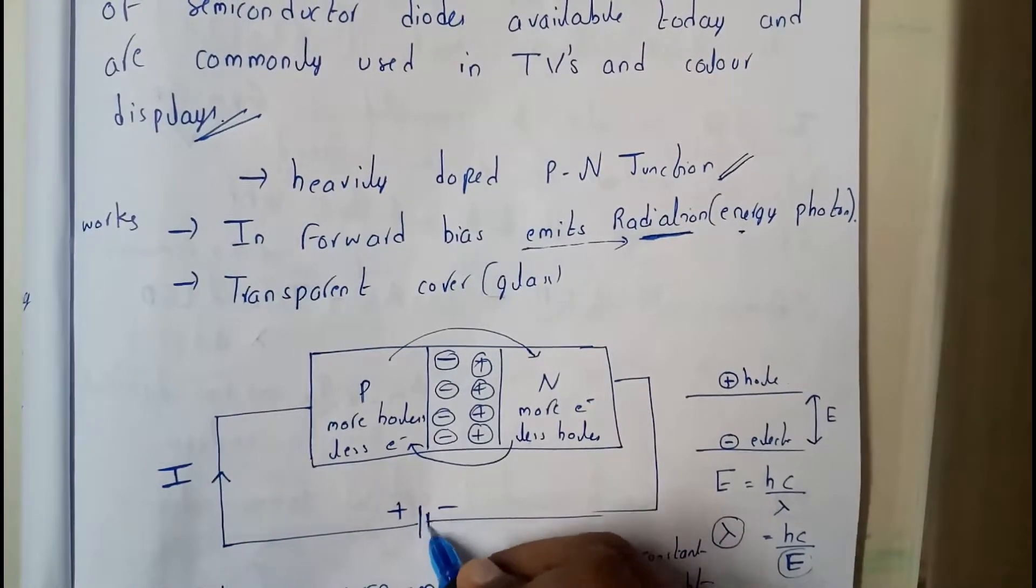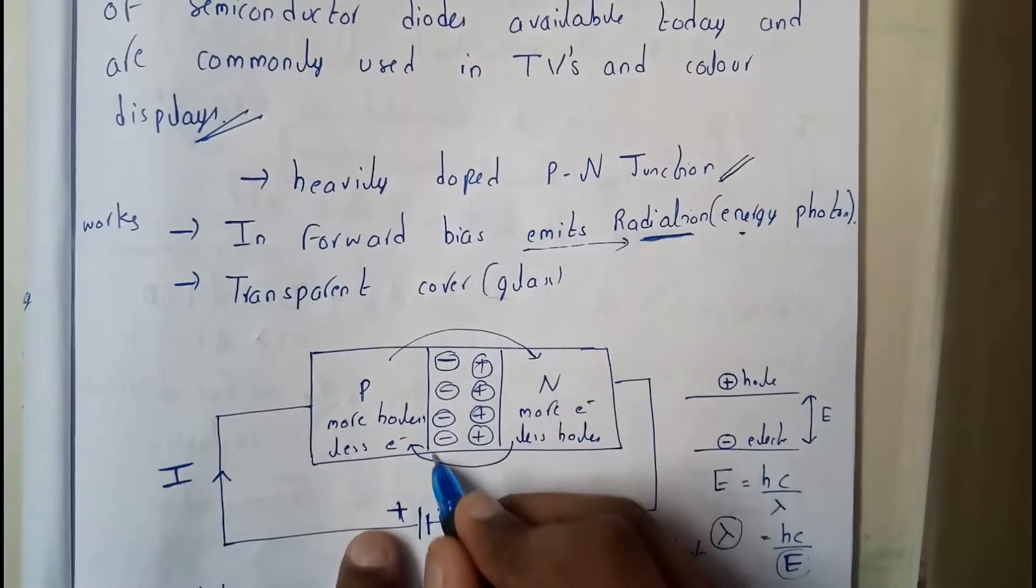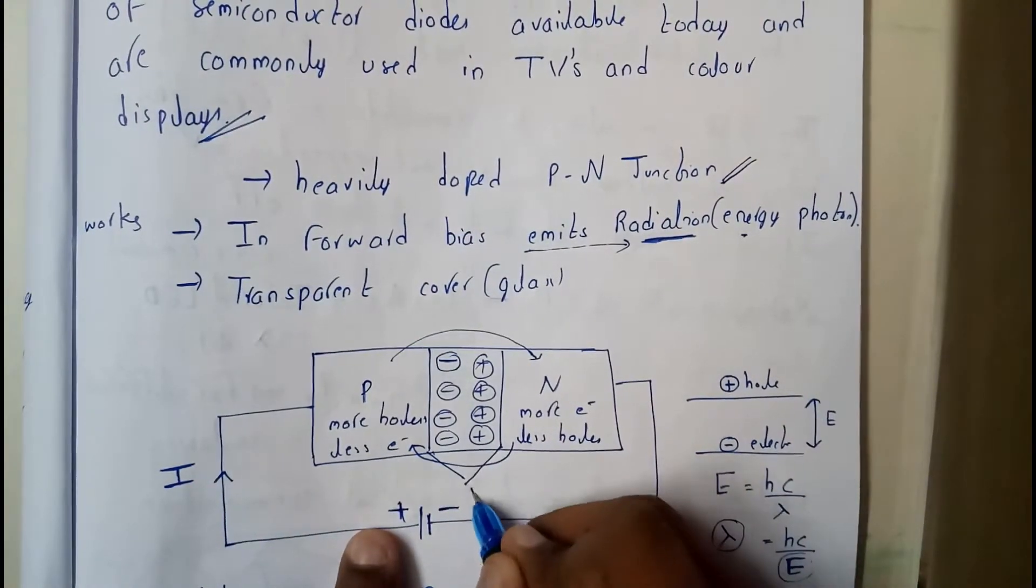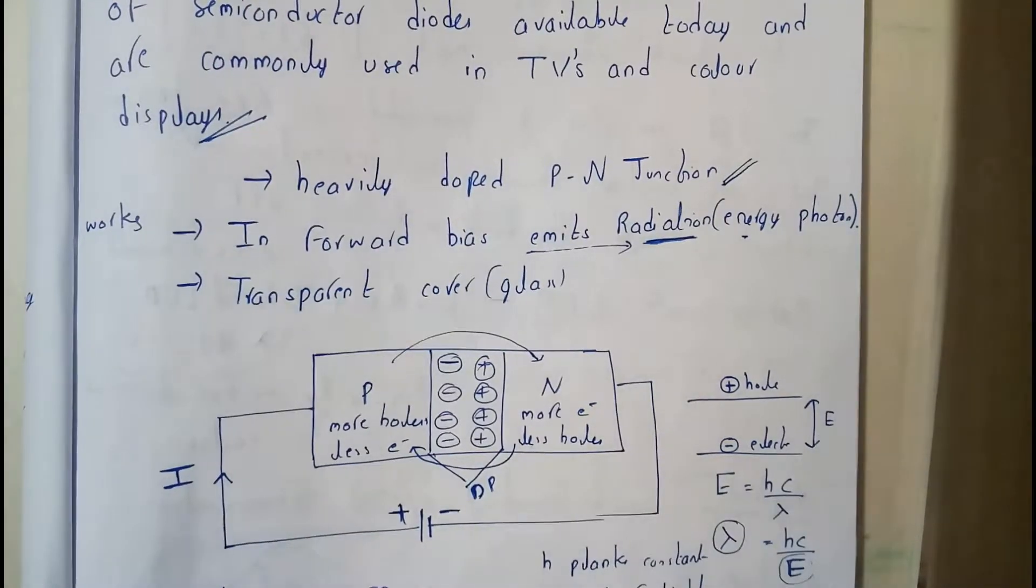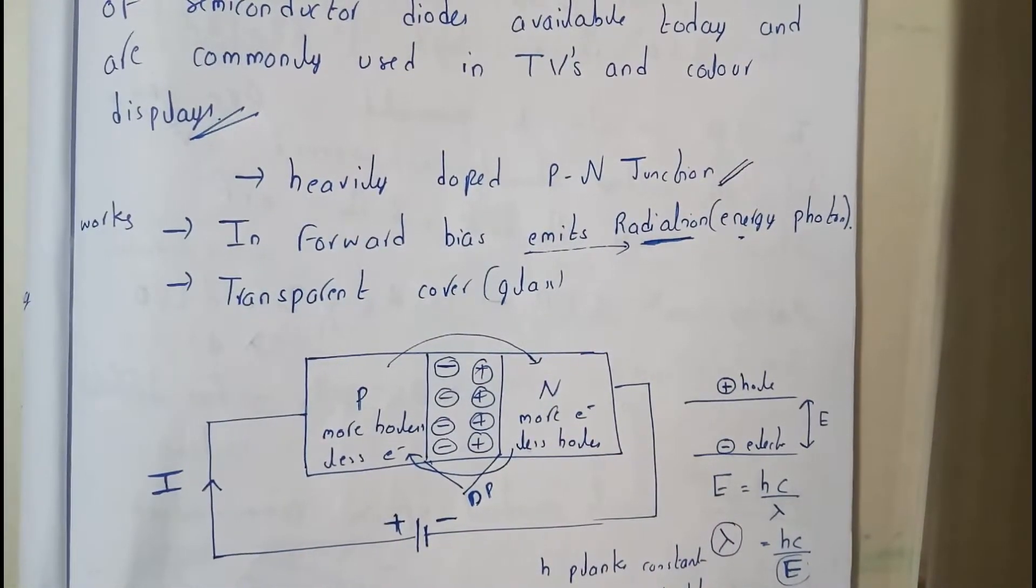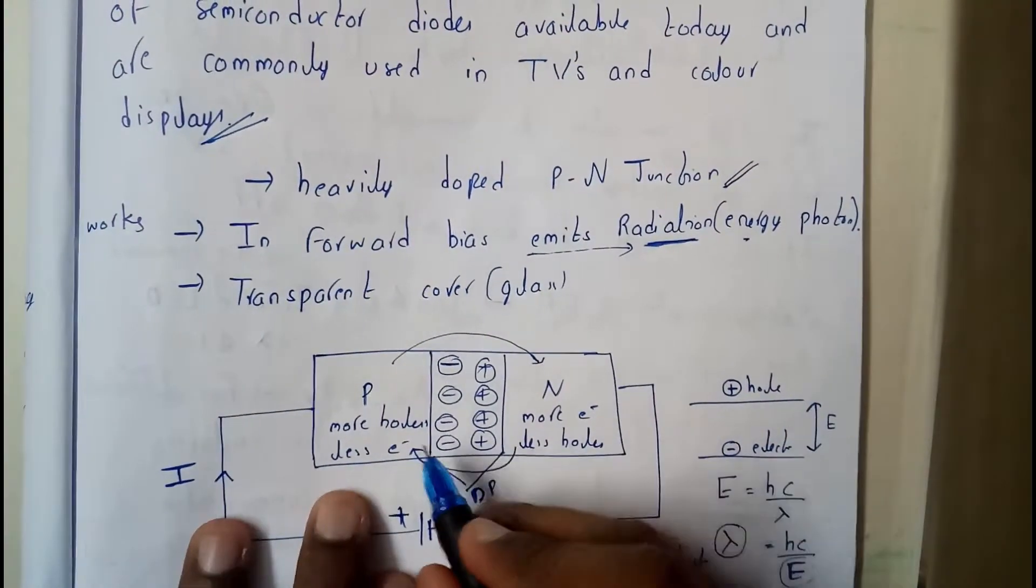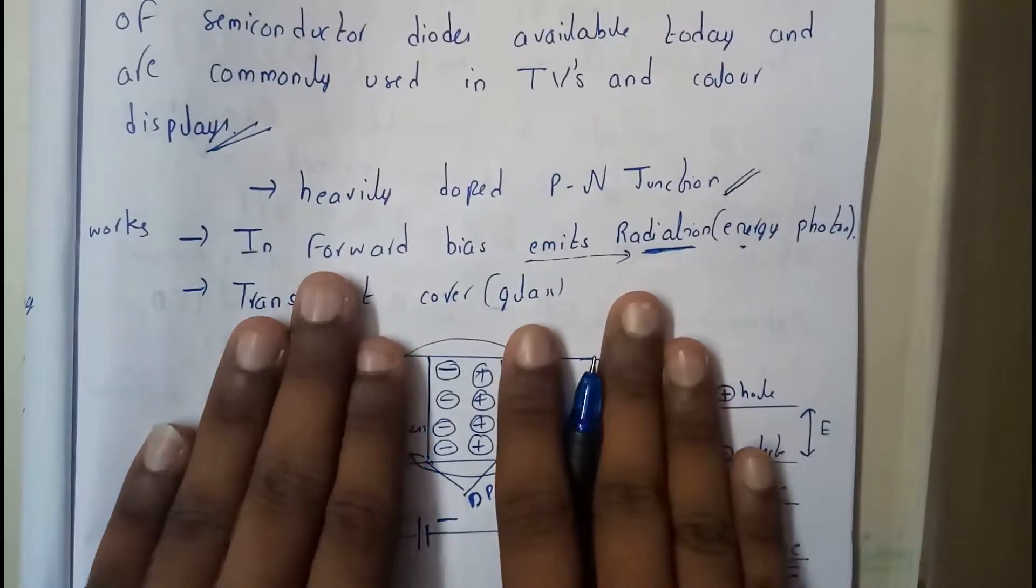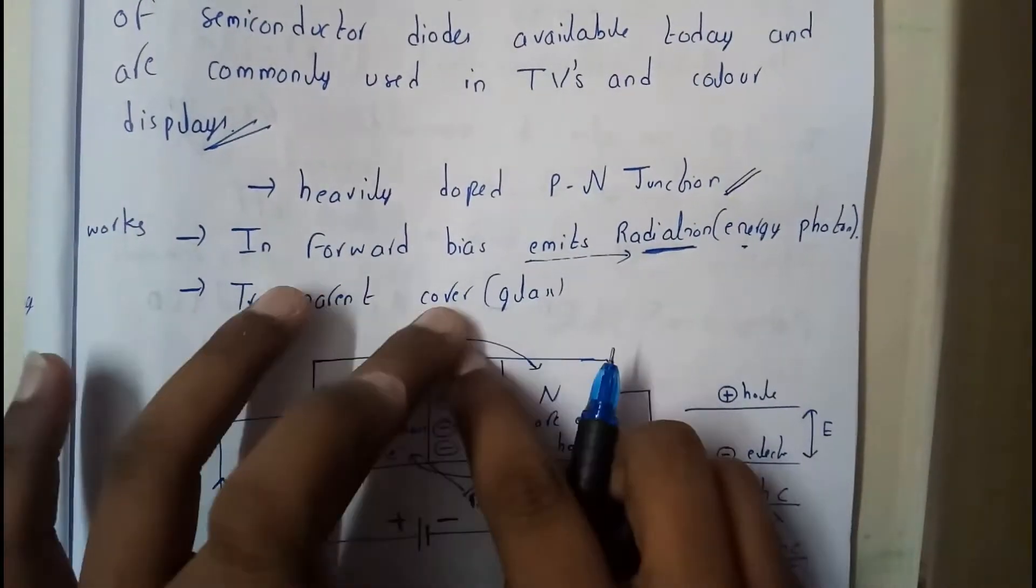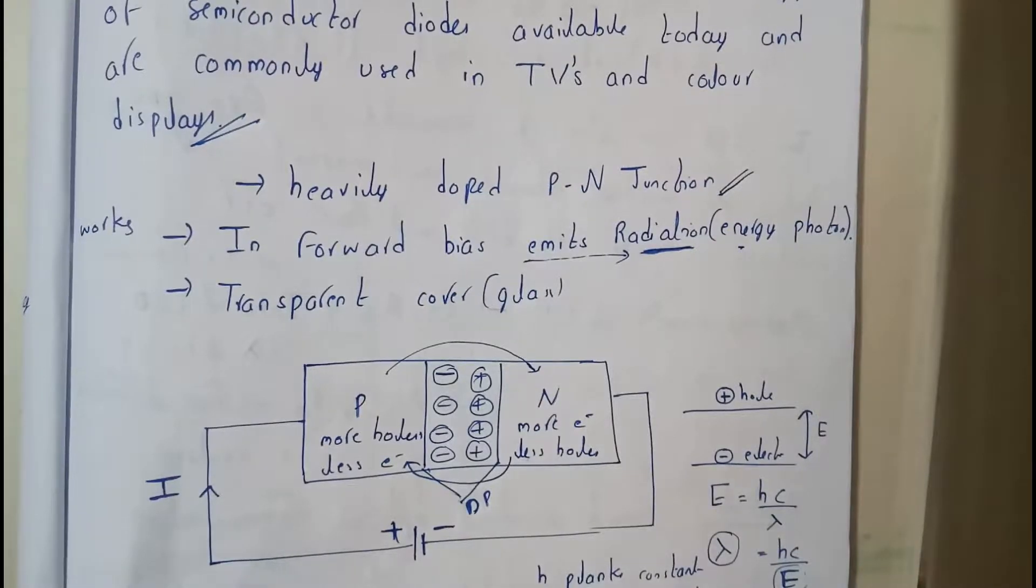When you give a forward bias for a PN diode, this will be our depletion region, I'll be writing as DR - depletion region. I hope everyone is now clear with this diagram. Basically this is our P type, this is our N type, and this is our depletion region in which they both are combinedly formed covalent bonds.